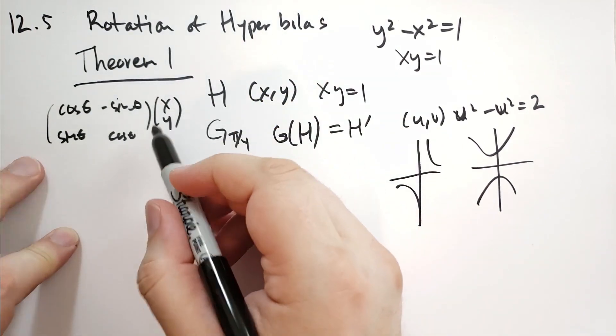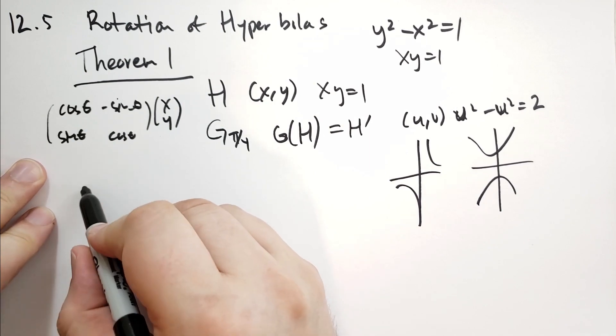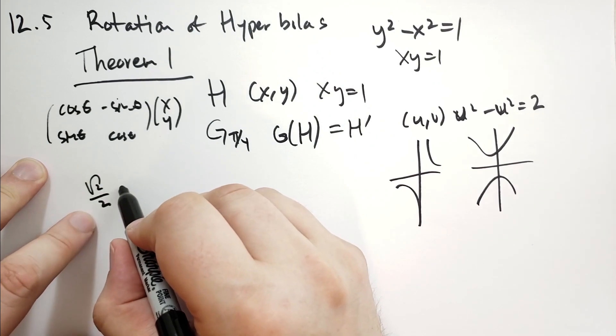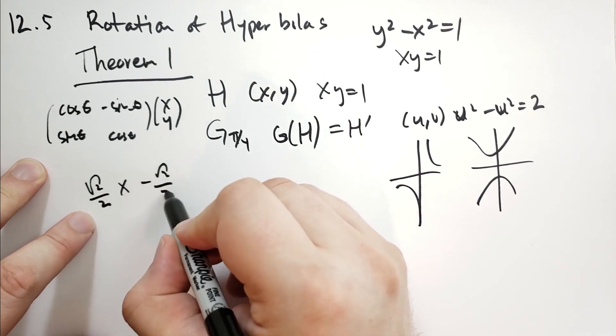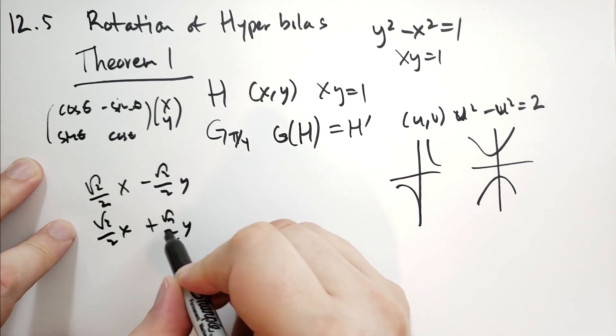So what is that going to give us? Well, x times cosine of theta is going to be root of 2 over 2, and then it's going to be x minus root of 2 over 2 y. And then root of 2 over 2 x plus root of 2 over 2 y.